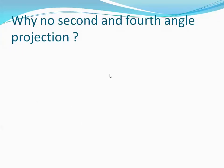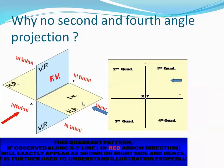Now let me explain why there is no second and fourth angle projection. We have the first, second, third, and fourth quadrants. There is a vertical plane and a horizontal plane. The observer is seeing from this direction, and the object is placed such that the front view is on the vertical plane and the top view is on the horizontal plane.